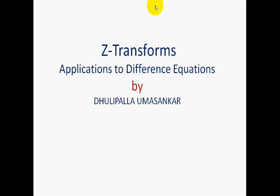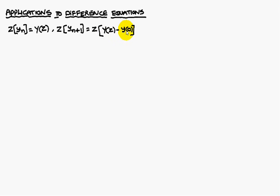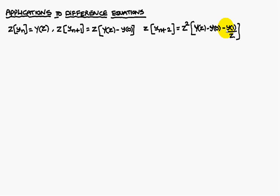Today we are going to discuss Z-transforms, applications to difference equations. Before solving the problems, we have to know some notations. Z-transform of Yn is equal to capital Y of Z. Z-transform of Yn+1 is equal to Z·Y(Z) minus Y(0). Z-transform of Yn+2 is equal to Z² · Y(Z) minus Z·Y(0) minus Y(1)·Z. These three notations will be very useful for solving difference equations.